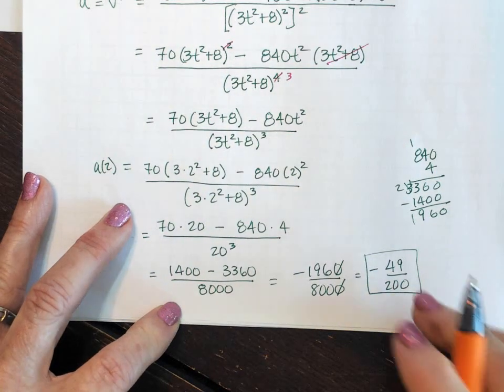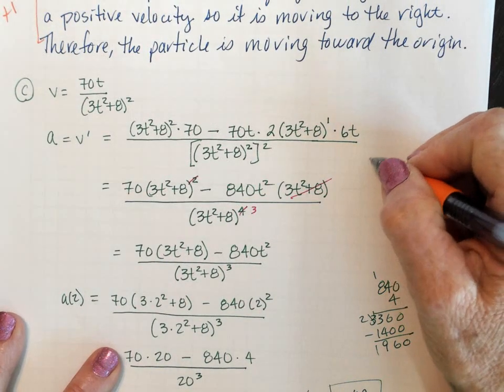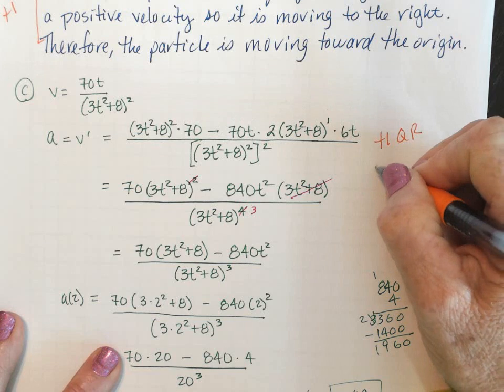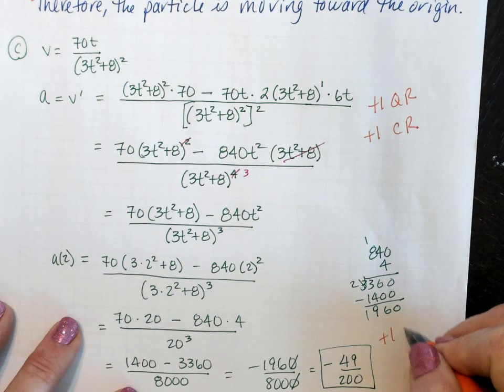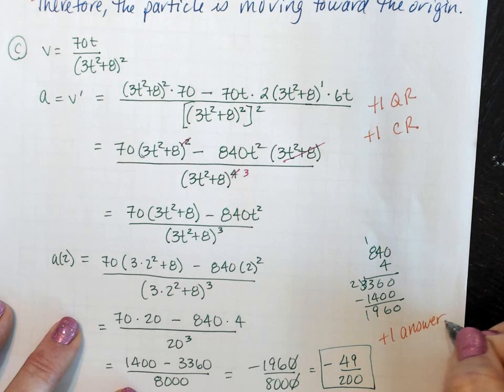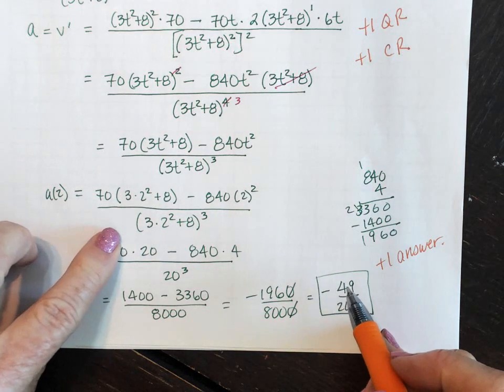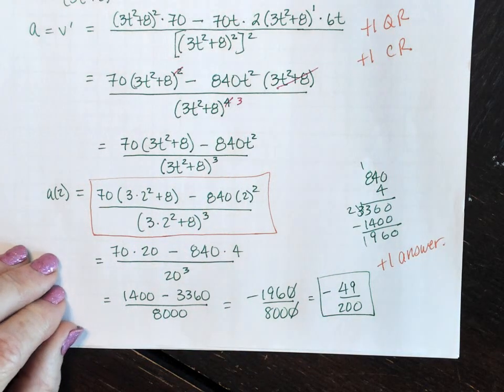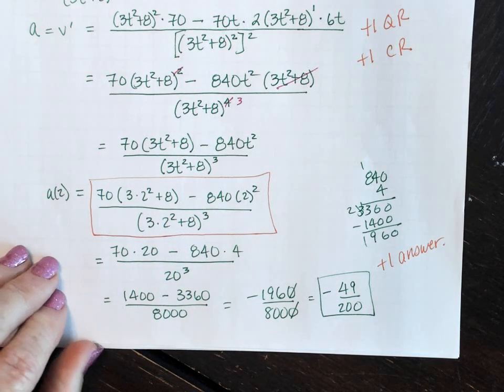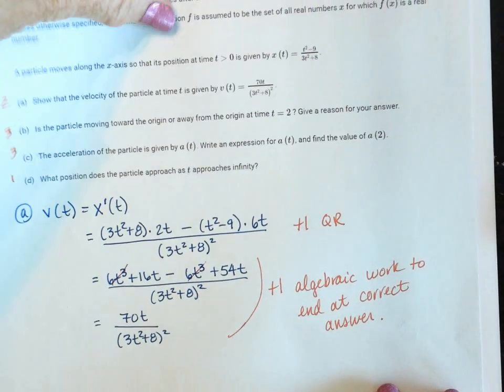All right, point values on this one: plus one for quotient rule, plus one chain rule, and plus one answer. Again, you don't have to simplify answers. I opted to on this one, but realistically you could stop right here for the answer where you have substituted in that 2.